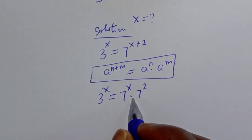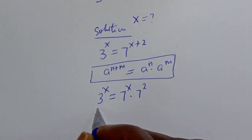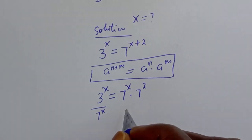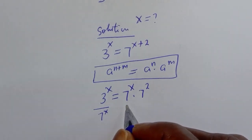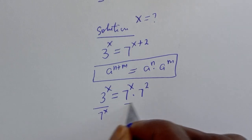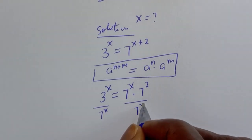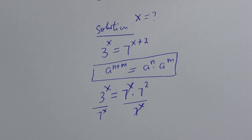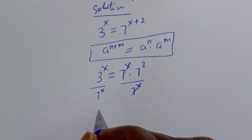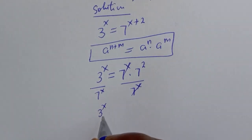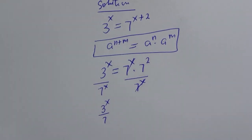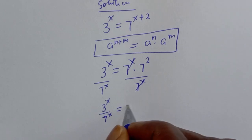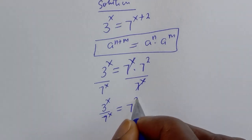Now let's divide both sides of this equation by 7 raised to power s. This will cancel this. We have 3 raised to power s over 7 raised to power s, which is equal to 7 squared.